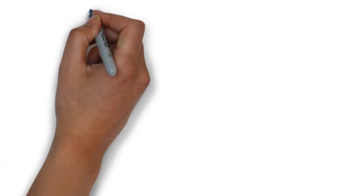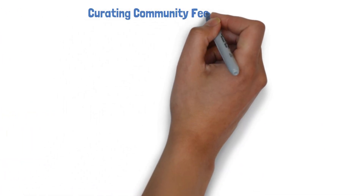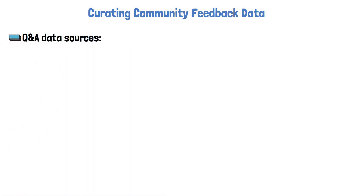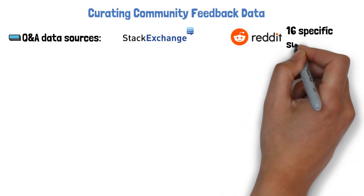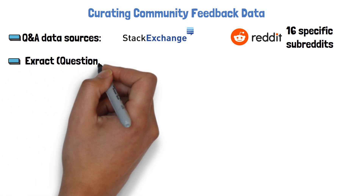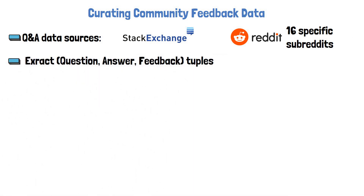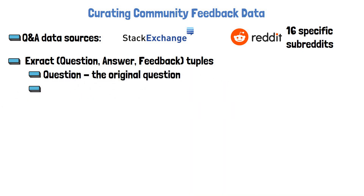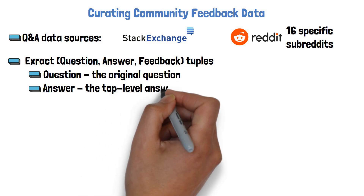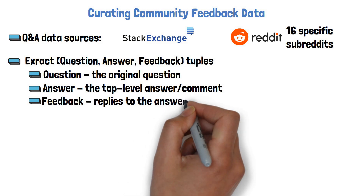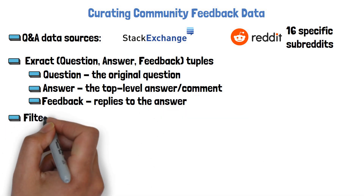Let's now see how the community feedback data was created. The researchers curated two question-and-answering data sources: StackExchange and Reddit, taking 16 subreddits with more question-and-answering nature. They extract tuples of question, answer, and feedback, where the question is the original question title and subtitle, the answer is the top-level answer or comment, and the feedbacks are replies to the chosen answer.